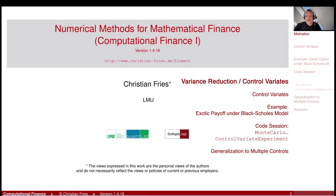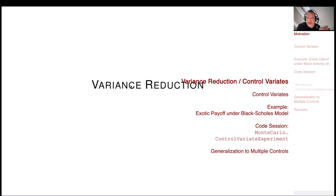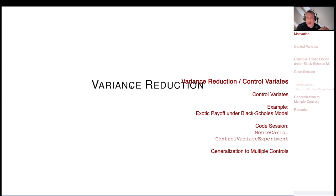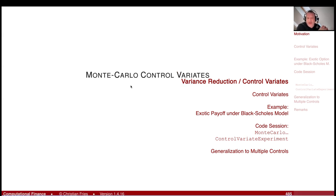Welcome to Numerical Methods. What I'd like to do now is a very short section on variance reduction. There are many methods for variance reduction — we already saw one. Importance sampling is also a kind of variance reduction. What I would like to discuss is Monte Carlo control variates.